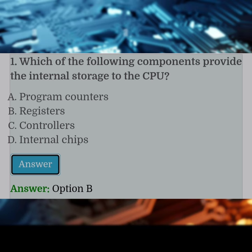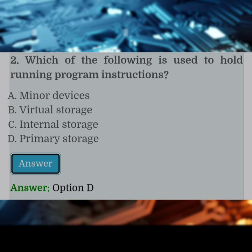Which of the following components provide the internal storage to the CPU? Answer: B, registers. Which of the following is used to hold running program instructions? Answer: D, primary storage.